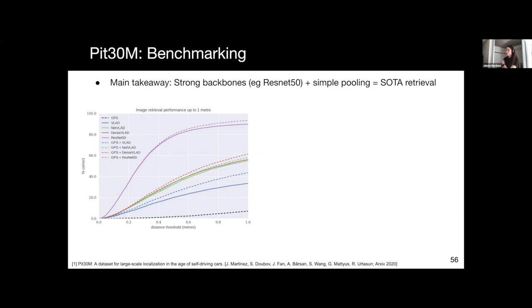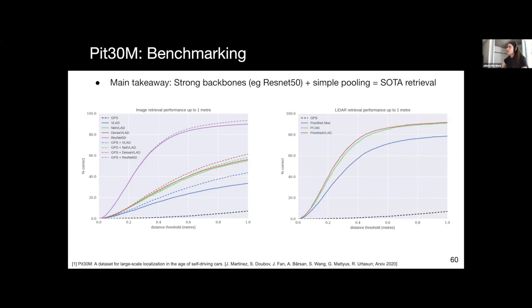We also benchmark LiDAR retrieval methods. Some baselines like PointNet with max pooling or PCAN or VLAD do okay, but again, if we train a ResNet on bird's eye view representation, which was mentioned previously in section three for perception, this seems to outperform previous approaches. Again, GPS actually helps, and this is a little bit funny. GPS actually can hurt a little bit if the method is accurate enough, and that's because our GPS can often be wrong by more than 20 meters, and so then you can't recover in this case.